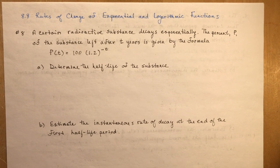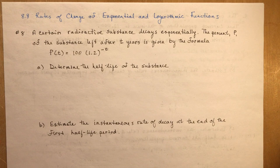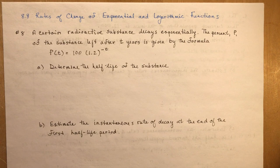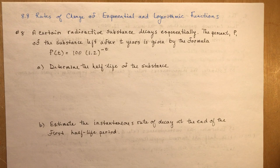Rates of change of exponential and logarithmic functions. So here we are at the end of the chapter, and like with every other chapter you've done almost in this book, the last section always deals with rates of change. By now I'm sure you're quite familiar with how it all works. The average rate of change is the slope of a secant, and the instantaneous rate of change is the slope of a tangent at a certain point. So let's go over a few of the questions in your textbook instead of talking again about how to find slope.